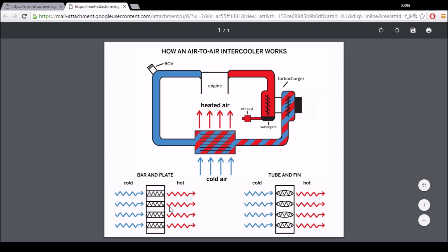So there are a couple differences between the bar and plate and the tube and fin other than design. The bar and plate does a much better job actually cooling the air. The actual build of the bar and plate is much stronger and will withstand more. The advantage to the tube and fin is that it's a lot lighter than the bar and plate.